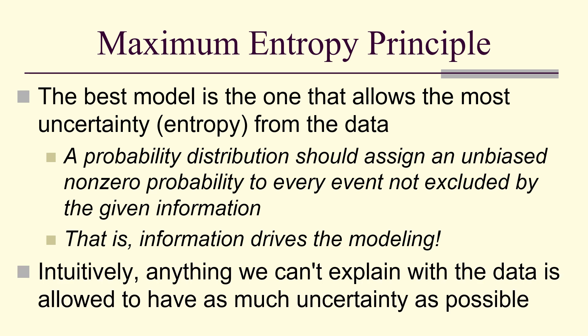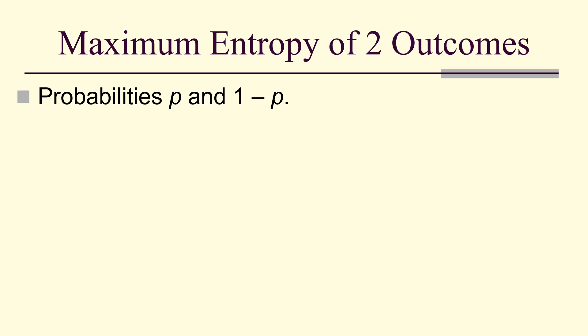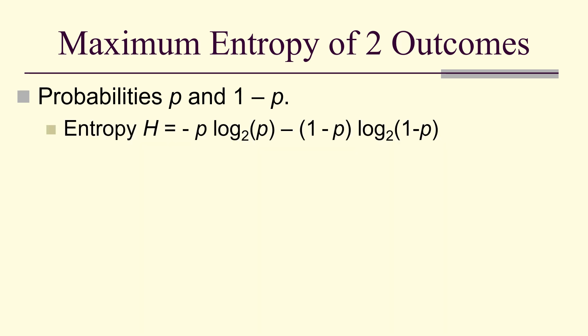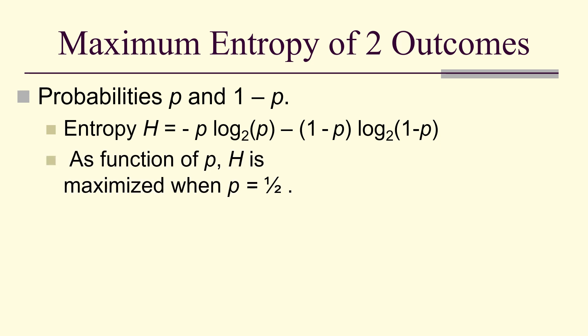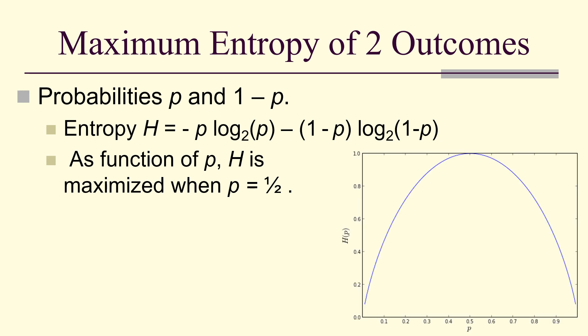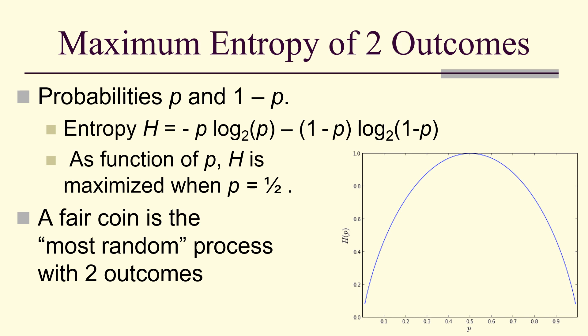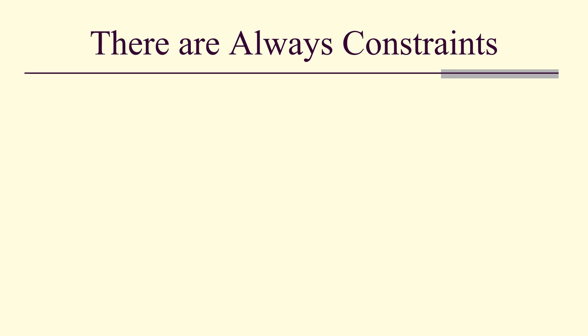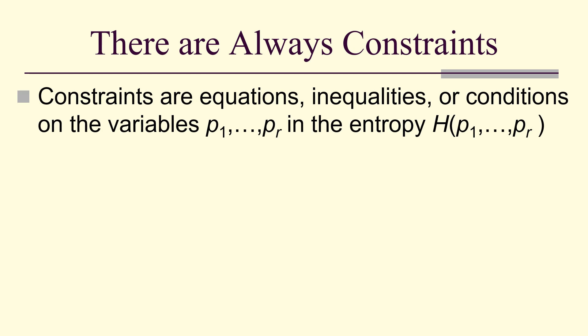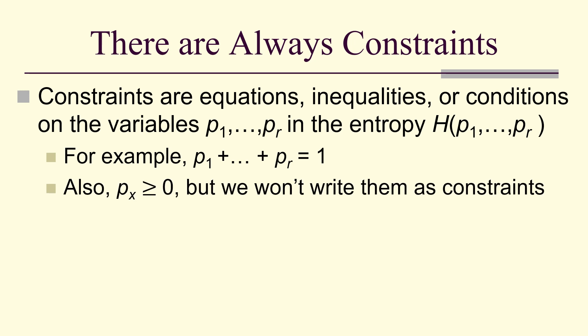Information is going to drive our models. Intuitively, anything we can't explain with the data is allowed to have as much uncertainty as possible. For example, with two outcomes — probabilities P and 1 minus P — entropy as a function of P reaches a maximum when P equals one-half. Therefore, a fair coin is the most random, or maximum entropy, process with two outcomes. But there are always constraints — equations, inequalities, conditions on the variables in the entropy function. For example, the sum of the variables must equal 1.